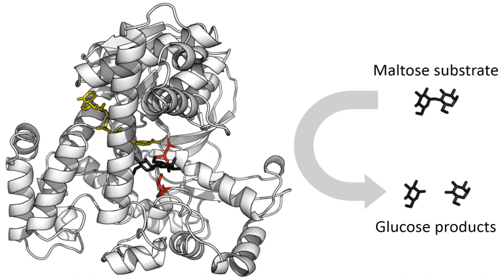Coenzymes are small organic molecules that can be loosely or tightly bound to an enzyme. Coenzymes transport chemical groups from one enzyme to another. Examples include NADH, NADPH and adenosine triphosphate. Some coenzymes, such as flavin mononucleotide, flavin adenine dinucleotide, thiamine pyrophosphate, and tetrahydrofolate, are derived from vitamins. These coenzymes cannot be synthesized by the body de novo and closely related compounds must be acquired from the diet. The chemical groups carried include the hydride ion carried by NAD or NADP+, the phosphate group carried by adenosine triphosphate, and the acetyl group carried by coenzyme A.